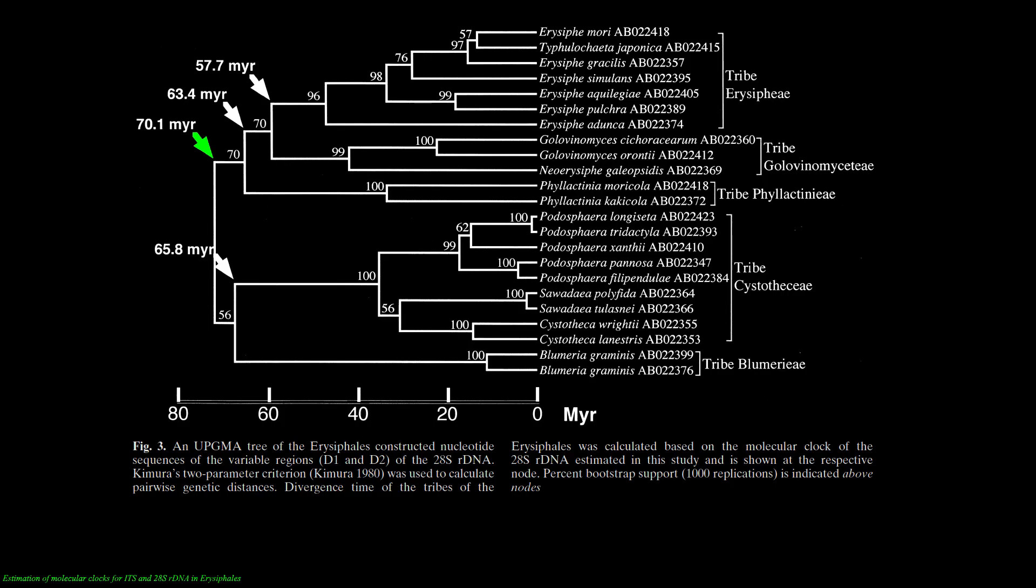The five major lineages or tribes of the Erysiphales in the family Erysiphaceae are Erysipheae, Golovinomyceteae, Phyllactinieae, Cystotheceae, and Blumerieae.